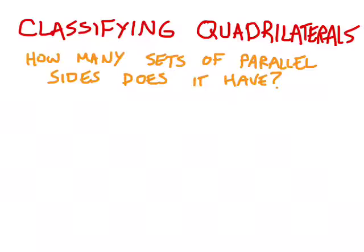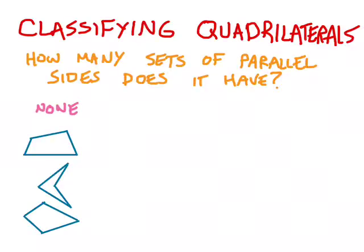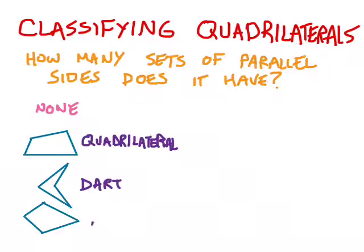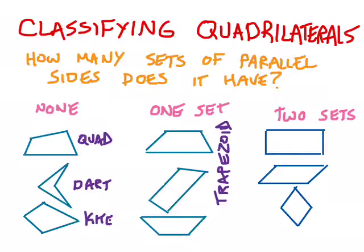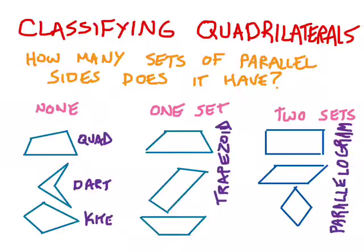A quadrilateral might have no parallel sides — if that's the case, you might be looking at just an unclassifiable garden variety quadrilateral, nothing special at all. Or you might be looking at a dart or a kite. On the other hand, if your quadrilateral has exactly one set of parallel sides, you're looking at a trapezoid. Finally, if it has two sets of parallel sides, you're talking about a type of parallelogram. Identifying the number of parallel sides is the most important first step in classifying what quadrilateral you're looking at.